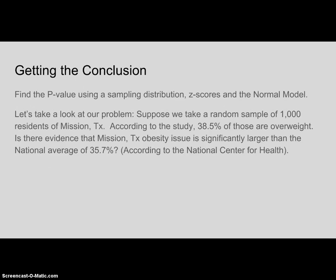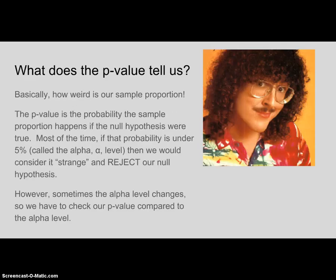After we do our work, we're going to find a probability called the p-value. We check if that p-value is small, because if it's small, it tells us something is unusual. The p-value is the probability that the sample proportion happens if the null hypothesis were true. If that probability is less than 5%, we reject the null hypothesis. If it's not small enough, we fail to reject the null. That 5% threshold is called the alpha level, and it can change, but you always compare your p-value to your alpha level.